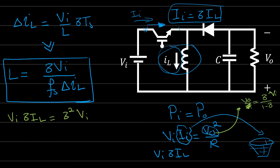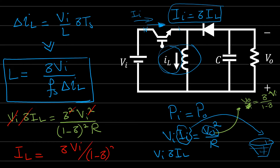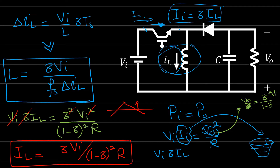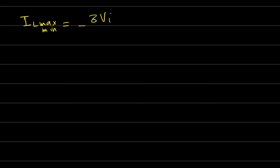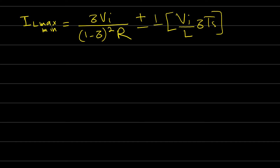Working through the power balance, the average inductor current is I_L = δ · V_in / [(1 − δ)² · R]. This is the average inductor current. The maximum inductor current is I_L_max = I_L + ΔI_L / 2, and the minimum is I_L_min = I_L − ΔI_L / 2, where ΔI_L = (V_in / L) · δ·Ts. These are the maximum and minimum values of the inductor current.